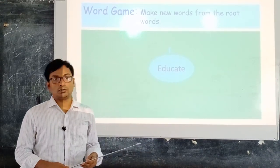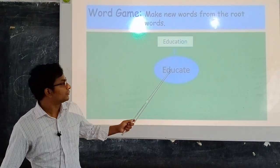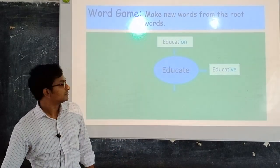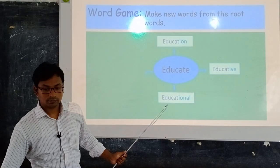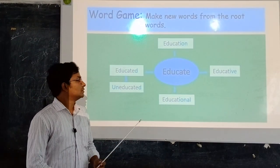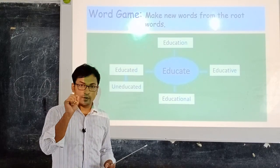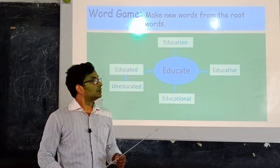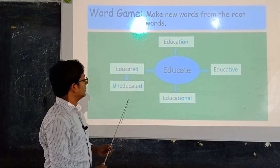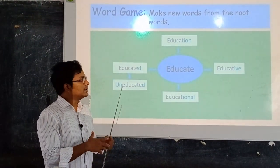I hope that you have already thought about it. We can see the first word: education. We can make the new word education from educate. Next one is educative. Another one is educational. And another one is educated. And next one is uneducated. So, dear students, just pay attention. We have created 5 new words from the word educate by adding letters to the front and end of the root word, such as '-ion', '-ive', '-ional', '-d', and 'un-'. Thus, we have made new words from a root word.